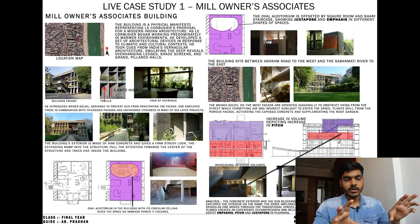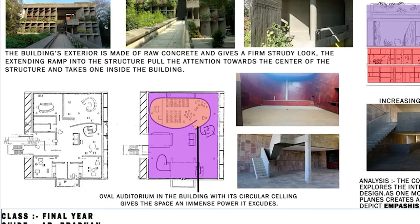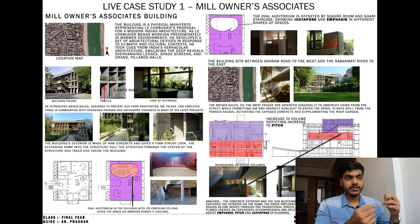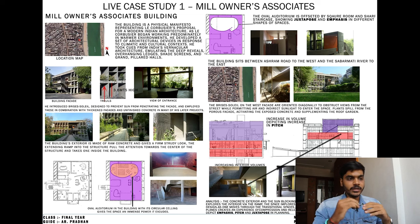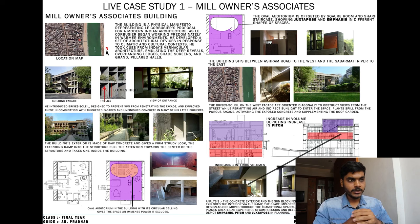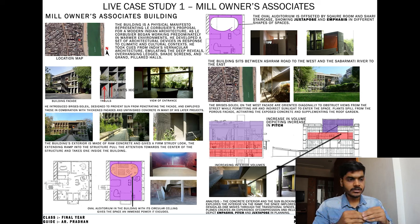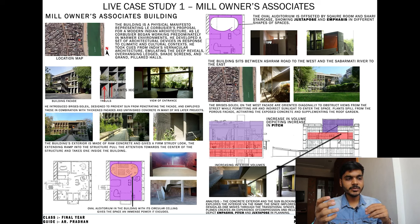Next I did a case study of the Mill Owners Association. The oval auditorium with its circular ceiling gives the space immense power. The oval auditorium is offset by a square room and sharp staircase, showing juxtaposition and emphasis in different shapes. As the volume increased going up, the pitch also increased, denoted by the verticality of the space. In analysis: the concrete exterior and sun-blocking framework portray brutalist design; one explores the interior via a ramp; curvilinear shapes suggest contrast; and the intersection of curvilinear and orthogonal planes creates an experience of compression and release, depicting emphasis, pitch, and juxtaposition in musical terms.